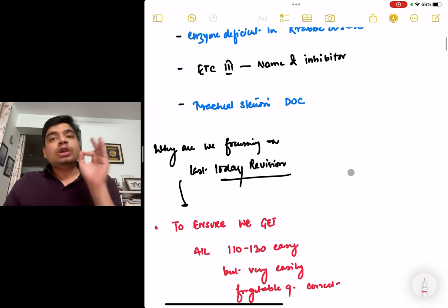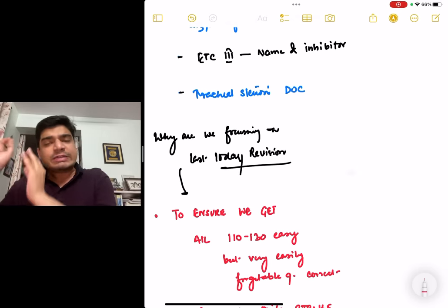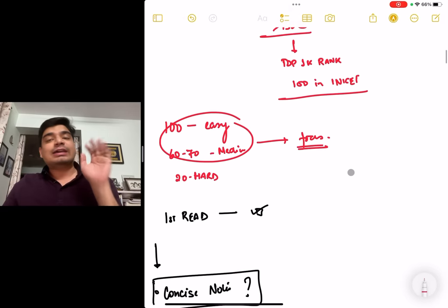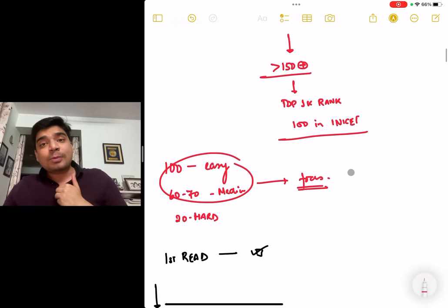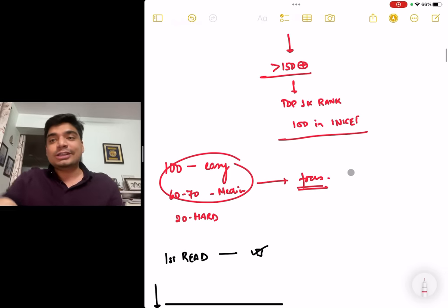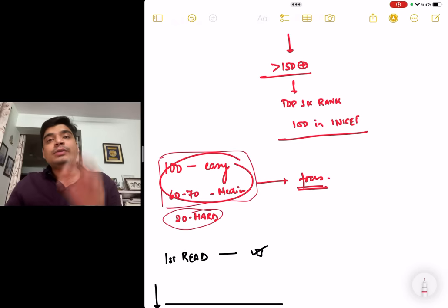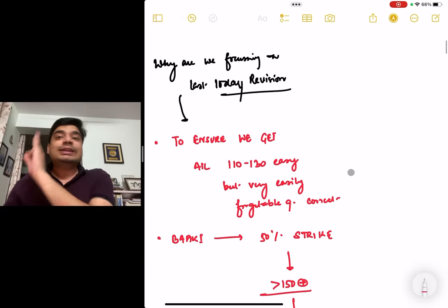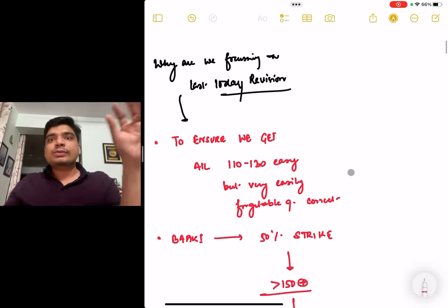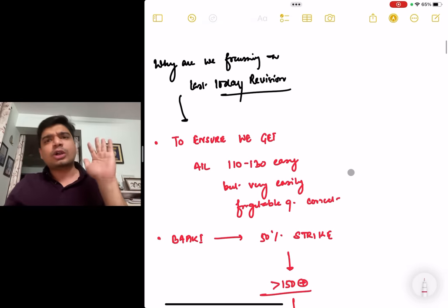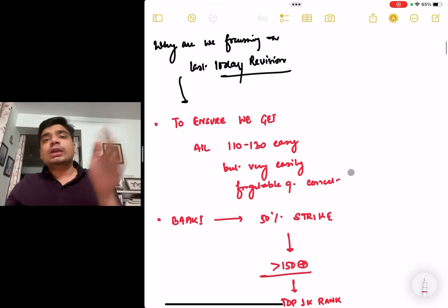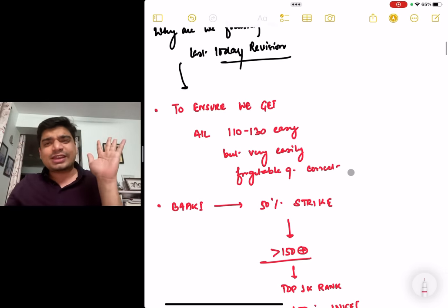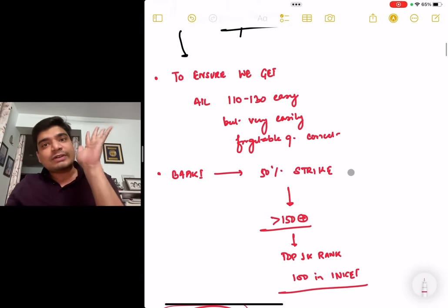This is why the last 10-day revision is important. Because in order to ensure you get easy 110-120 marks in your exam immediately. Remember that every exam consists of 100 easy questions, 60 to 70 medium level questions, and only 20-30 questions are hard. If you get that last 10-day revision right, the easy one-liners, the easy questions from memory, you will get 100 there immediately.